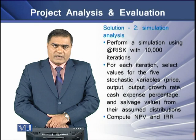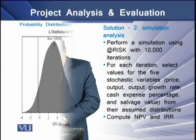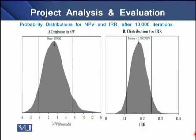We then compute NPVs and IRRs from these observations. On the screen, you can see the probability distribution graphs of NPV and IRR after 10,000 iterations. The peaks of these two distributions show they are approximately normally distributed — neither peaked nor flat — and both distributions are relatively positive but skewed to the right.